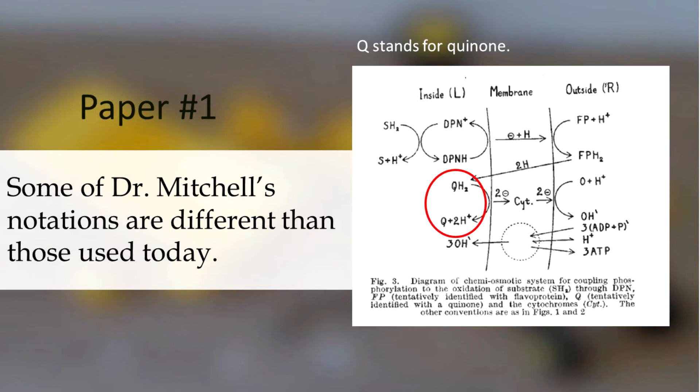Q stands for quinone. In mitochondria, you would find it in your textbooks as coenzyme Q. In chloroplasts, you would see it called plastoquinone.